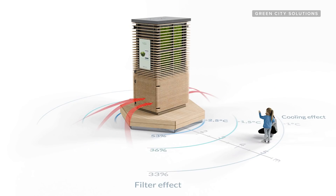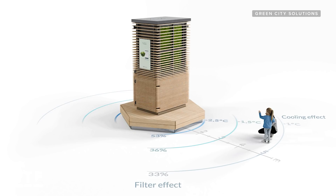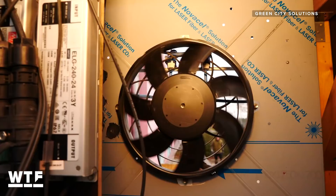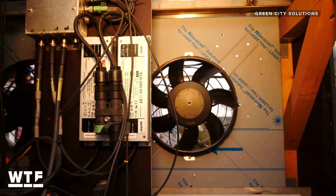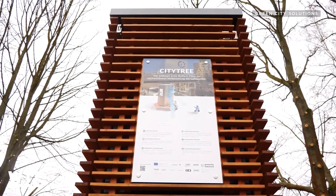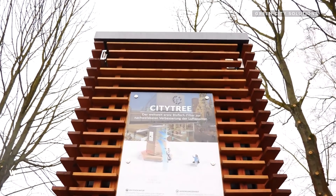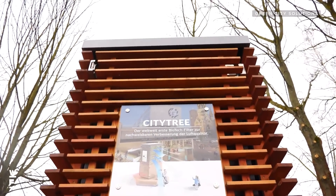Green City Solutions claims that one CityTree can reduce fine dust pollution by up to 53% and filters air equivalent to the breathing volume of 7,000 people every hour. The inputs for that mossy air purification are about 4 liters of water per operating hour, depending on the weather, and 120 watts of power.